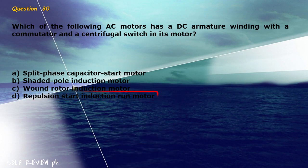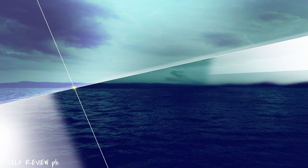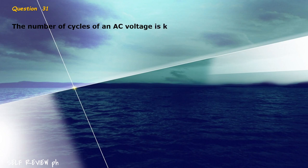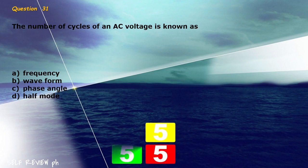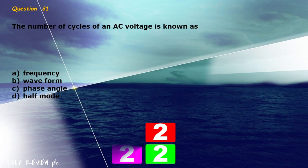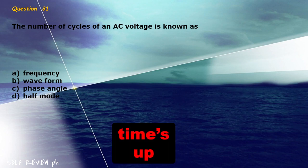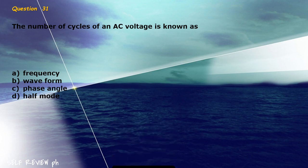Question 31: The number of cycles of an AC voltage is known as blank. A) frequency, B) waveform, C) phase angle, D) half mode. The correct answer is letter A, frequency.